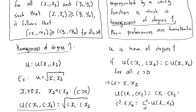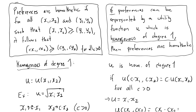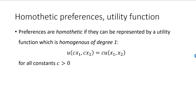Keep in mind: the definition says that if preferences can be represented by a utility function that is homogeneous of degree one, then preferences are homothetic. It does not say that all utility functions representing the same preferences will be homogeneous of degree one. So if preferences can be represented by a utility function, they are homothetic if they can be represented by a utility function which is homogeneous of degree one — meaning u(cx1, cx2) equals c times u(x1, x2) for all constants c greater than zero.